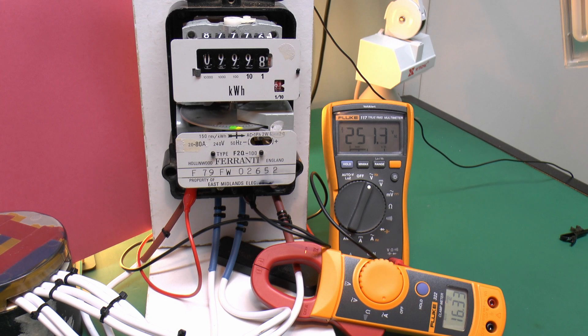Right, here is the meter actually running. The voltage is displayed on the larger meter there, 251. And the current on the smaller meter at the bottom, 16.26.